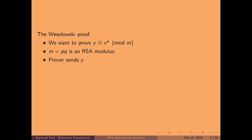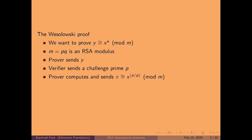We do that in the interactive version of the protocol by the prover sending y. The verifier sends a challenge in the form of a prime p. Then the prover computes the proof π, which is x to the e divided by p — the quotient, rounded down — modulo m.